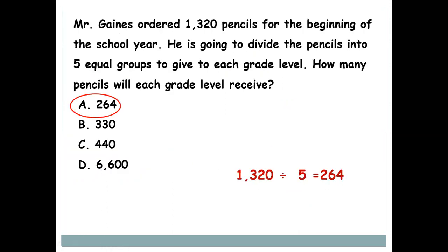The next question: Mr. Gaines ordered 1,320 pencils for the beginning of the school year. He is going to divide the pencils into 5 equal groups to give to each grade level. How many pencils will each grade level receive? The operation you have to do is division — divide 1,320 by 5. You can do long or short division, and the answer is 264. Practice a few more long division questions to be thorough with the process.